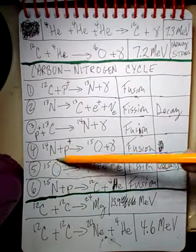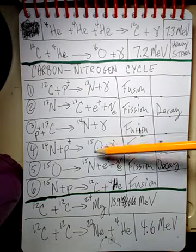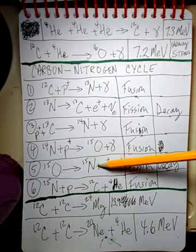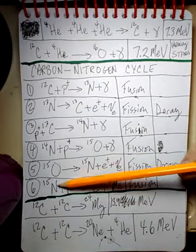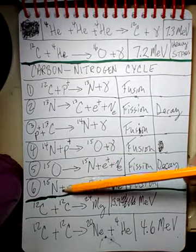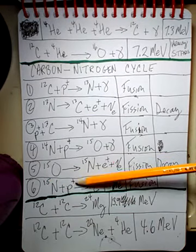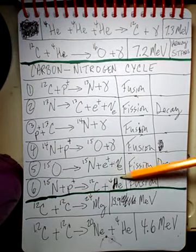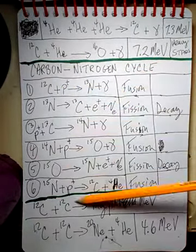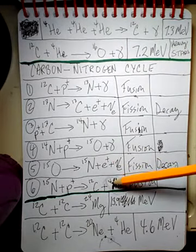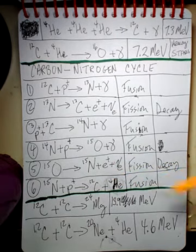Then we have another fission: oxygen-15 becomes nitrogen-15 plus a positron plus an electron neutrino. Then nitrogen-15 plus another proton will give you carbon-12 plus a helium nucleus. This starts the cycle back again — we use this carbon-12 to add another proton, and so on. What the cycle produces as end products are helium-4 nuclei pumped into the core of the star, and this is also a fusion reaction.